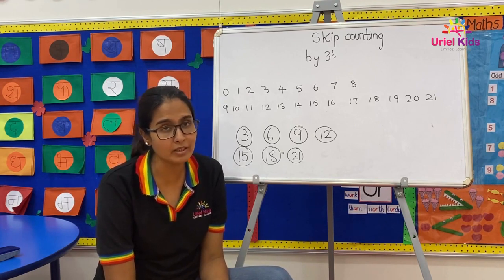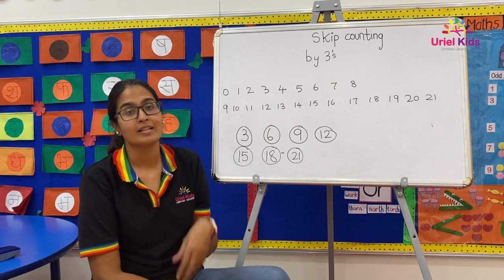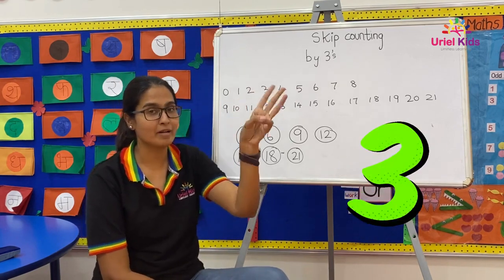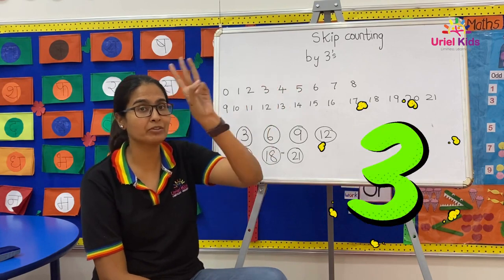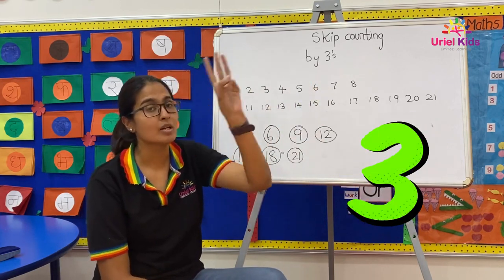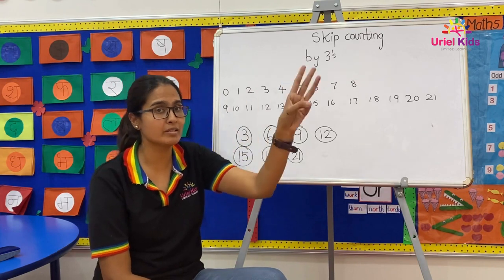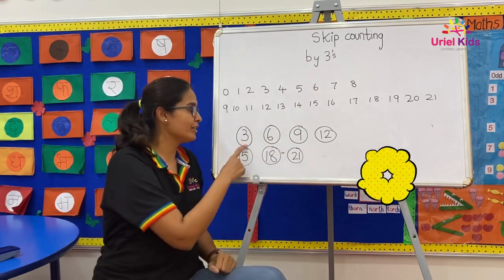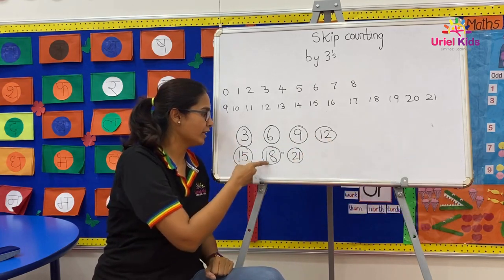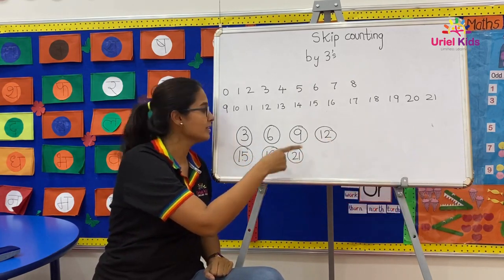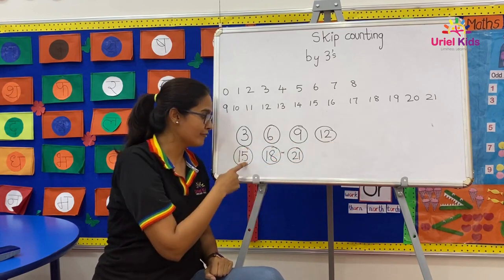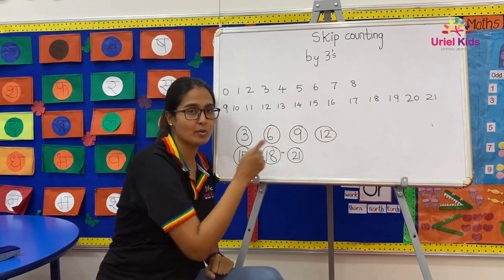Are you all ready to sing along with me? Skip count, skip count, count by threes. We can count till 21 — 3, 6, 9, 12, 15, 18 and 21.